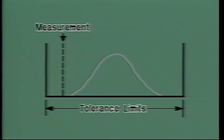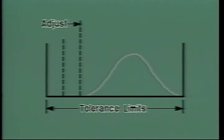Therefore, that part would not represent an average dimension produced by the process. You would have made an adjustment you didn't need to make, since the parts were not really going out of tolerance. In other words, you would have made more work for yourself by making adjustments that weren't necessary.